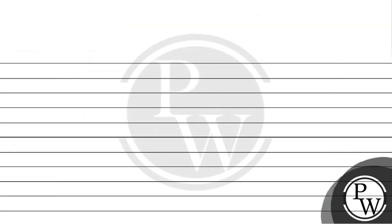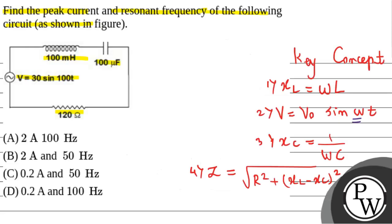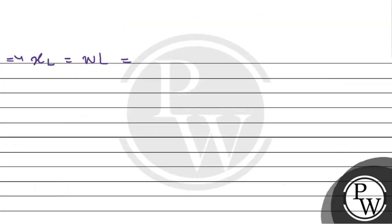Let's start the solution. First of all, let's calculate the peak value of current. For that we will require the inductive reactance XL which is given by omega into L. If you compare the original equation with the given equation, omega will be equal to 100 here. That is 100 multiplied by inductance 100 millihenry, that means 100 into 10 to the power minus 3. This comes out equals to 10 ohms.